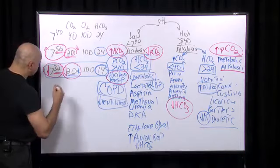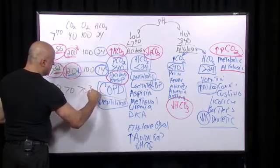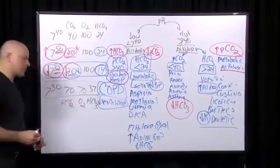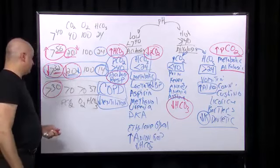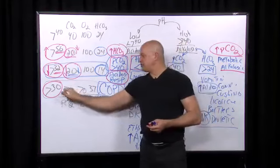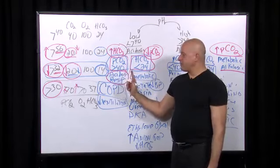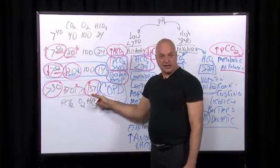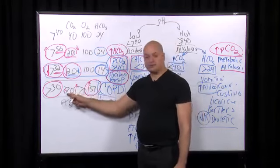Let's work through an example: pH 7.30, pCO2 70, O2 70, bicarbonate 37. The pH is less than 7.40, so it's an acidosis. The CO2 is elevated, so the primary problem is a respiratory acidosis. The elevated bicarbonate of 37 represents metabolic compensation for that respiratory acidosis — this is a compensated (chronic) respiratory acidosis.